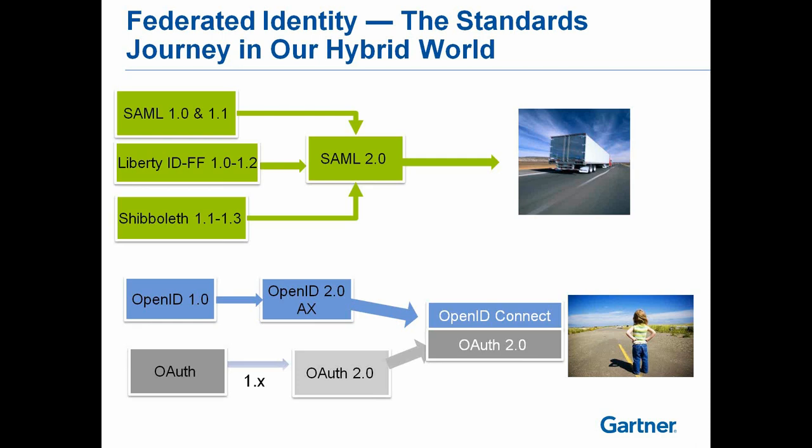Clients often ask about newer REST-based standards — OpenID and OAuth. These are coming along and maturing, and they show a lot of promise, but they're nowhere near the state of maturity that SAML is. OpenID has evolved predominantly in the social networking space. Developers today prefer REST-based standards because they're less verbose than XML standards like SAML. It is becoming the new language of the web.